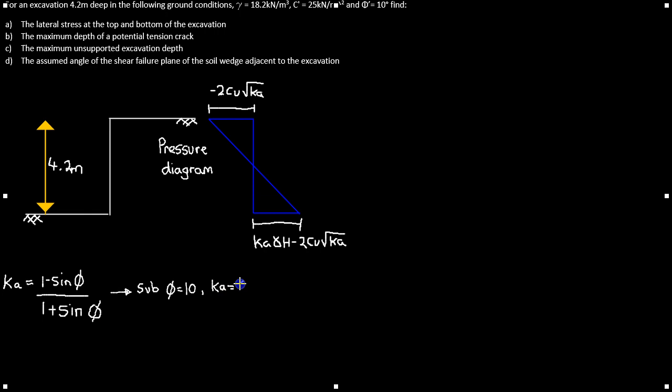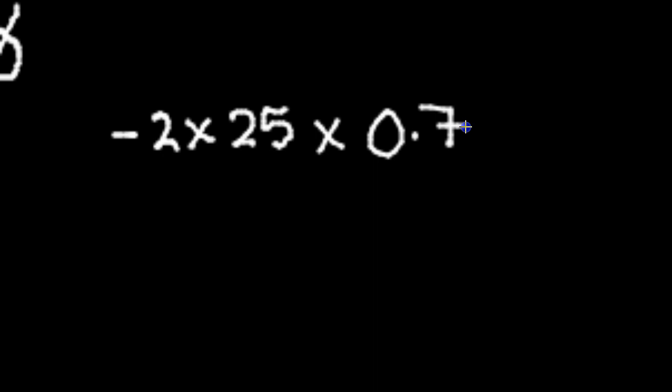Now we substitute kA and the cohesion value into the equation for lateral stress at the top. At the top of the excavation, the lateral stress equals minus 2 times 25 times the square root of 0.7, which gives negative 41.83 kPa. Remember to include the negative sign, as shown on the pressure diagram.